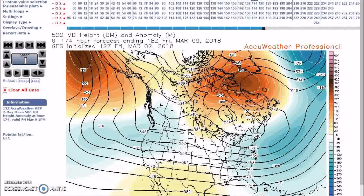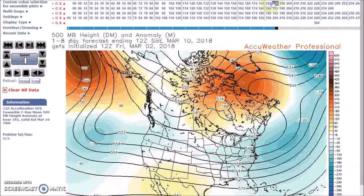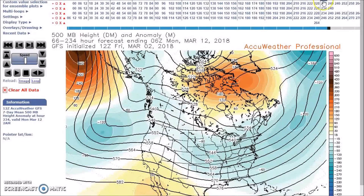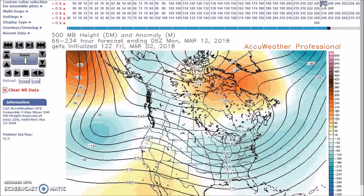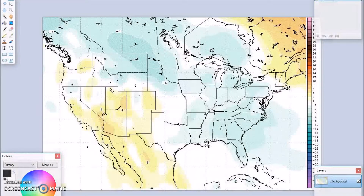For March 8th to 12th, looking at the 9th, we still have the area of positive height anomalies remaining in place. We have troughs here with near to below normal heights across much of the nation. Going to the end of the period around the 12th, you can see this pattern. The rest of the models are in good agreement with this.